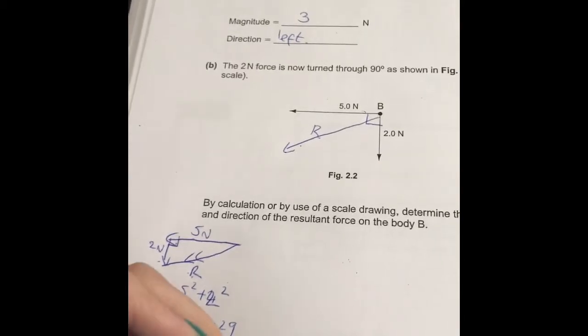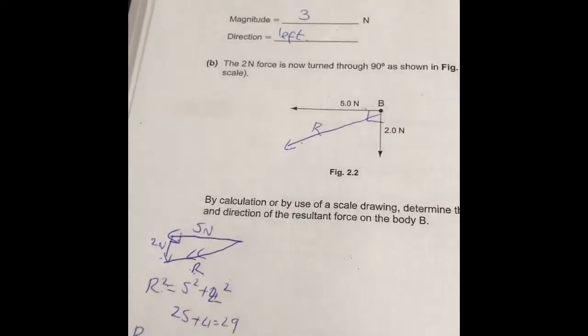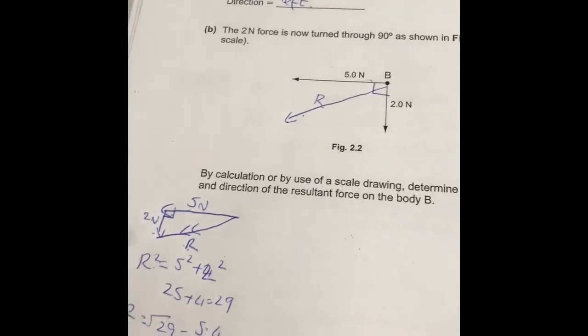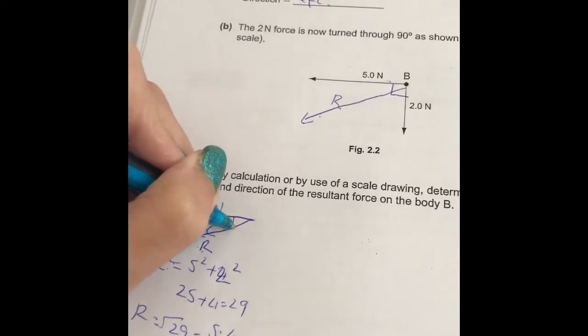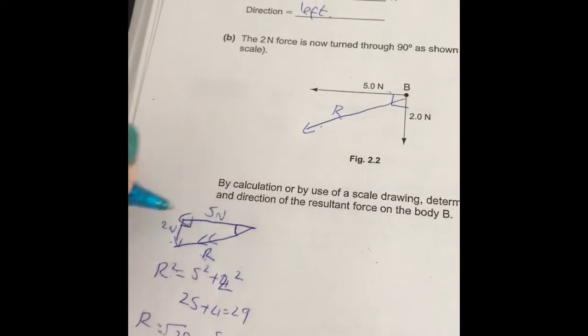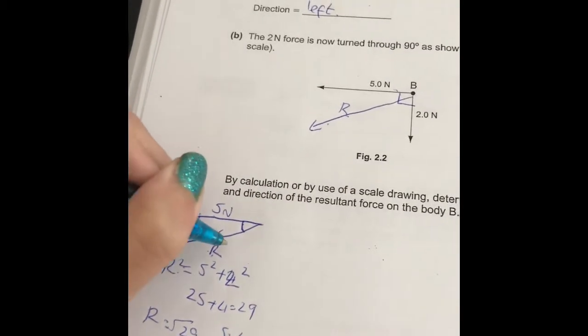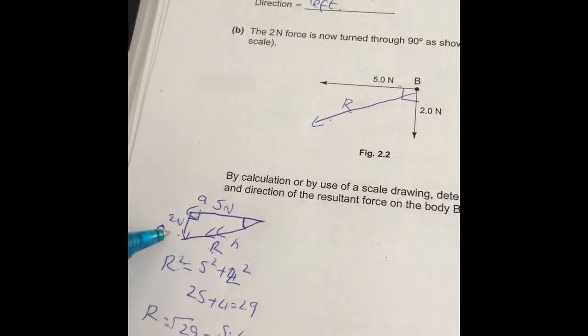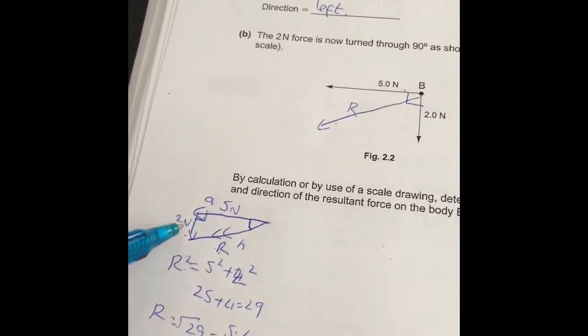So the magnitude, the size is 5.4 newtons. Now the direction it tells us here is the angle to the horizontal. So this is the angle here that I want, because there's my horizontal line. So this is the opposite, and that's my hypotenuse, and this is my adjacent.